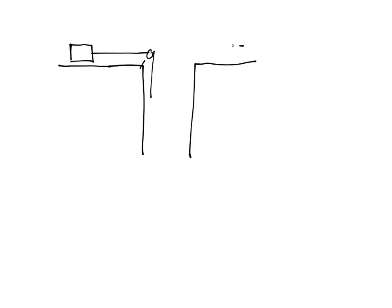In this problem we've got two tables. One table here and another table here. On this table we have a mass connected to a pulley, and on this table we also have a mass connected to a pulley on this side. Interestingly, they're both connected to a big mass in the middle of the two tables. Let's call this A, this B, and this C. Because they're separate ropes, this is going to have tension one and this is going to have tension two — they're definitely going to be different tensions.